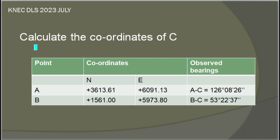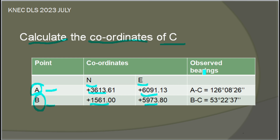The question asks us to calculate the coordinates of point C. We are given points A and B, with their coordinates — the northings and eastings for both A and B. We are also given the observed bearings from A to C and from B to C. These are the forward bearings given. The task is simply to calculate the coordinate of C.